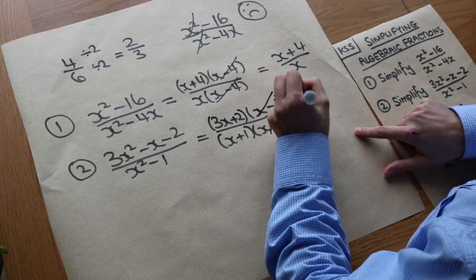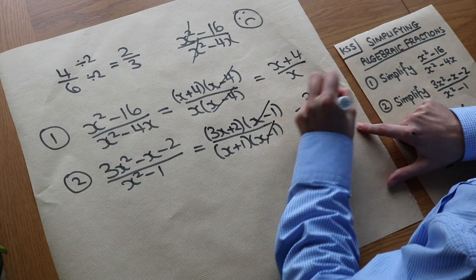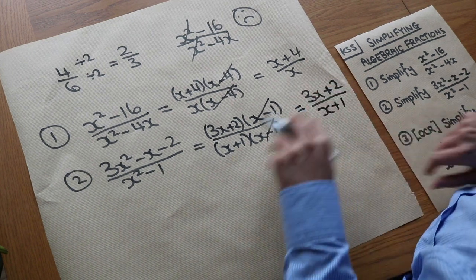So we can see that the x minus 1s are common to top and bottom, so we can divide by them to leave just 3x plus 2, no brackets required, over x plus 1. And that is that one.